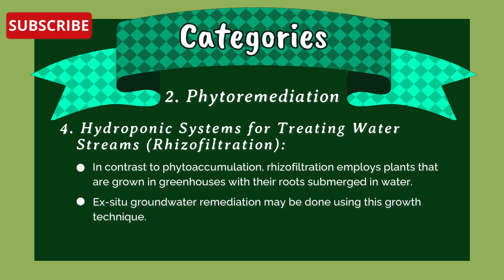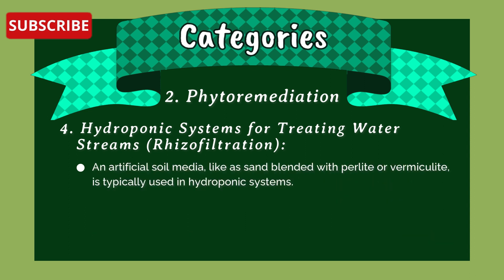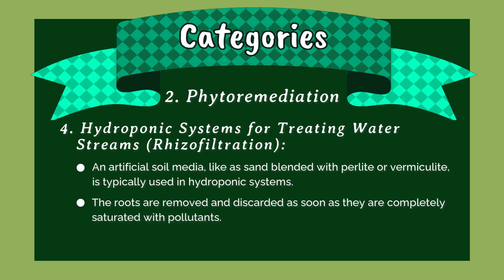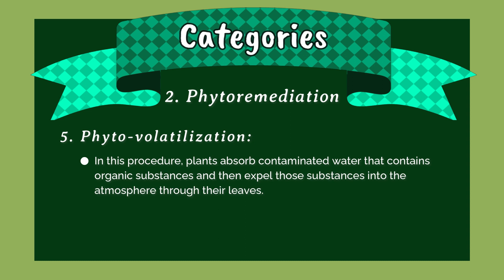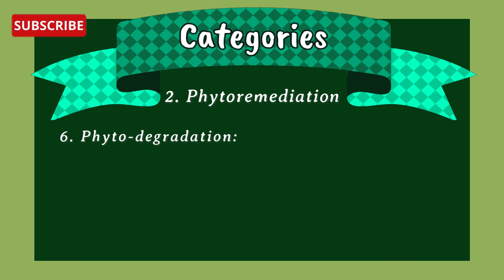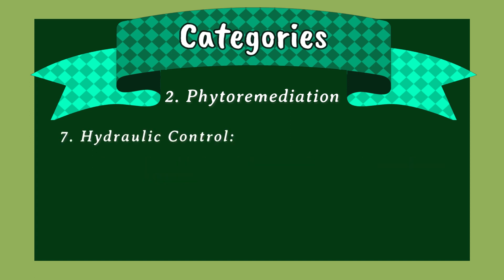Rhizofiltration can be used for ex situ groundwater remediation: groundwater is pumped to the surface to irrigate these plants, and artificial soil media like sand blended with perlite or vermiculite is typically used in hydroponic systems. The roots are removed and discarded once they are completely saturated with pollutants. (5) Phytovolatilization: plants absorb contaminated water containing organic substances and expel those substances into the atmosphere through their leaves.